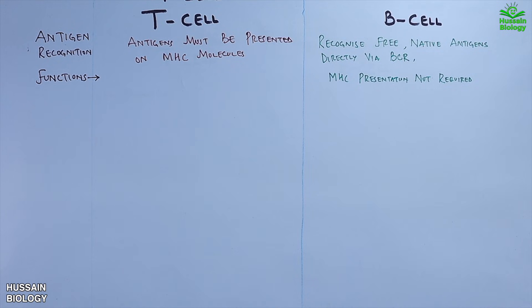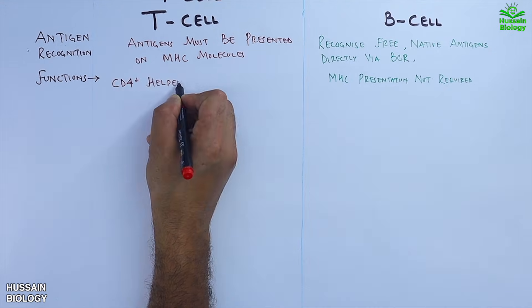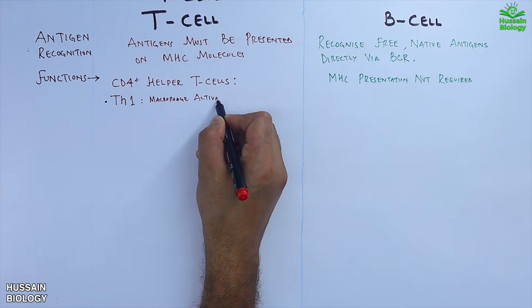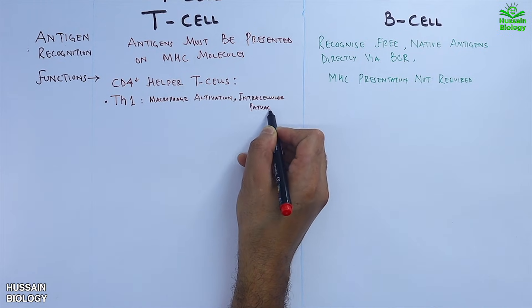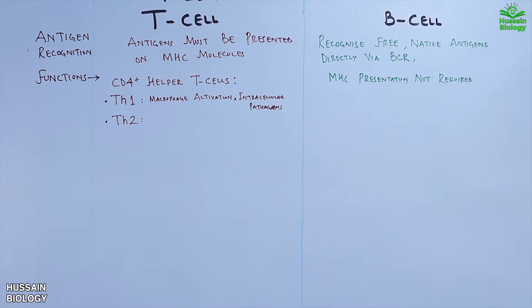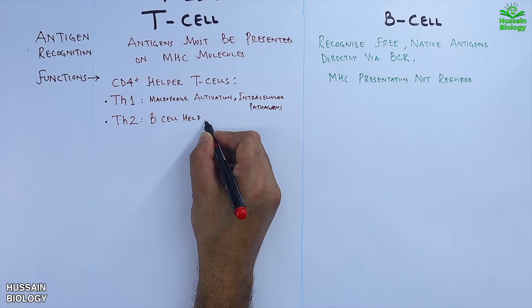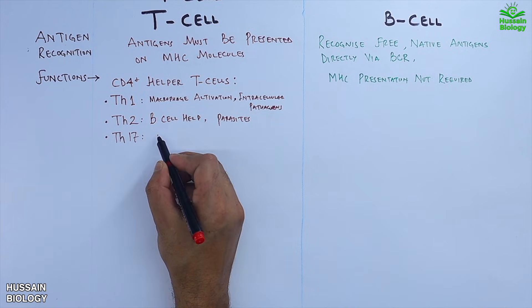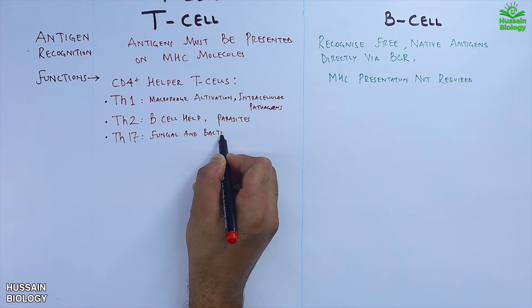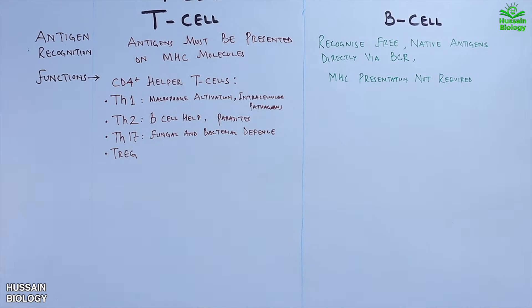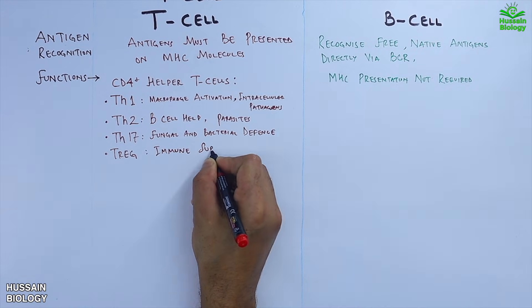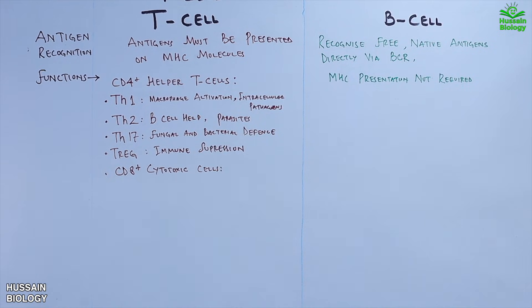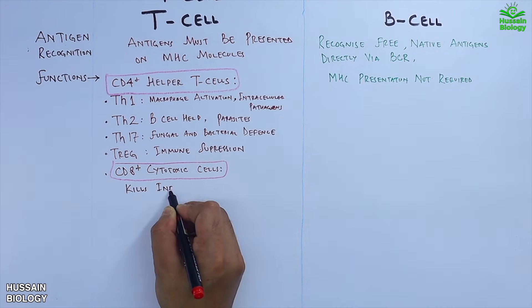Now let's look at the functions of CD4+ helper T-cells. Th1 cells activate macrophages and fight intracellular pathogens. Th2 cells help B-cells and combat parasites. Th17 cells defend against fungal and bacterial infections. Treg cells suppress the immune response to prevent overactivity.